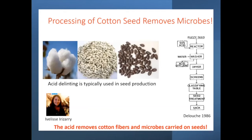These plants don't grow well unless you apply nitrogen. They require nitrogen because they don't have the microbes. They also require fungicides, pesticides, and herbicides. Cotton is said to be a dirty crop, and it's likely dirty because we've removed those microbes. If we put those microbes back or treated seeds differently, we could probably use far fewer agrochemicals.